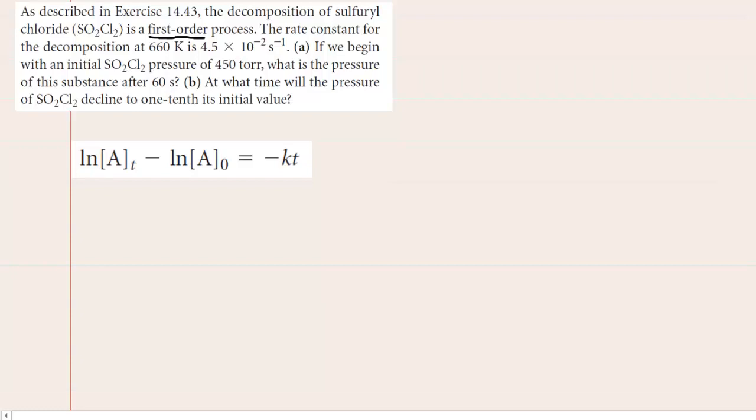So if we read on, we can see that the rate constant for this decomposition is 4.5 times 10 to the negative 2 inverse seconds. Now, rate constant is symbolized by lowercase k. So we can say that the rate constant is equal to 4.5 times 10 to the negative 2 inverse seconds.